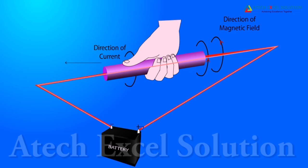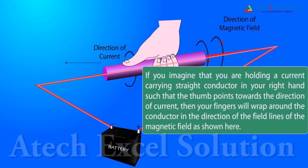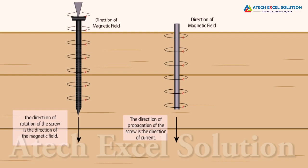Right hand thumb rule is a convenient way of finding the direction of magnetic field associated with a current carrying conductor. If you imagine that you are holding a current carrying straight conductor in your right hand, such that the thumb points towards the direction of current, then your fingers will wrap around the conductor in the direction of the field lines of the magnetic field. This rule is also called Maxwell's corkscrew rule.